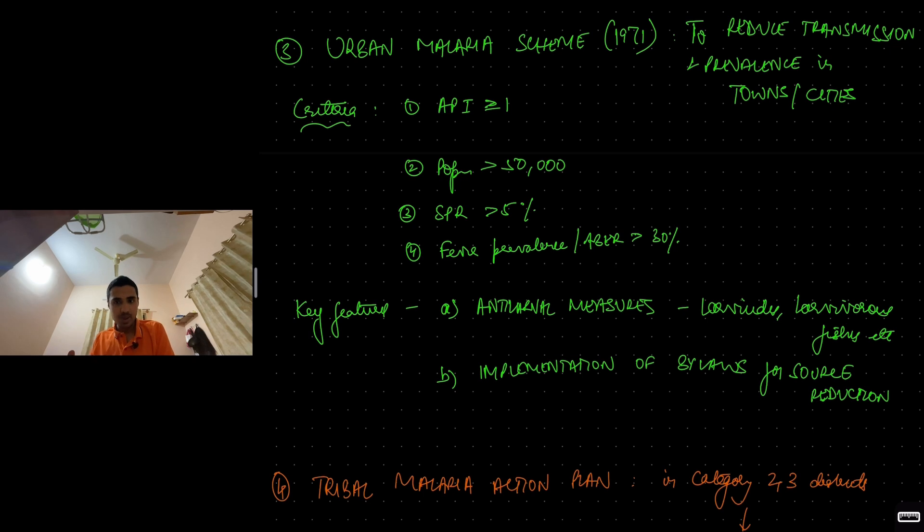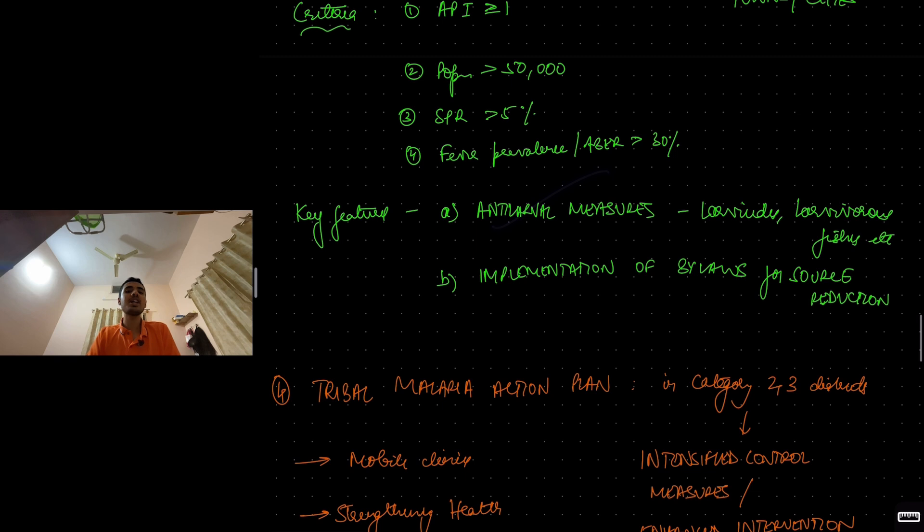What were the key features introduced in this program? Anti-larval measures were introduced, that is larvae sites, larvivorous fish and implementation of certain bylaws. Certain laws were introduced for source reduction. Example, when you're constructing a building, high-rise building, because of all the cement, you need to water down the cement and all, there'll be a lot of stagnant water, breeding areas for mosquitoes. So to tackle this, certain laws were introduced for how to manage standing water during construction sites. Basically, for source reduction, source of mosquito breeding.